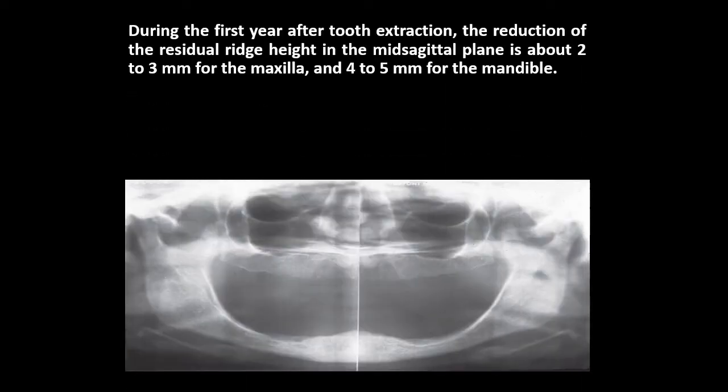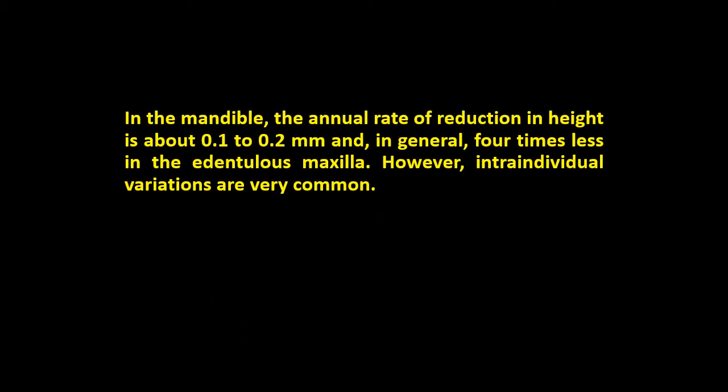During the first year after tooth extraction, the reduction of residual ridge height in mid-sagittal planes is about 2 to 3 millimeters for the maxilla and 4 to 5 millimeters for the mandible. The annual rate of reduction in the mandible is about 0.1 to 0.2 millimeters, and it is generally four times less in the maxilla; however, intra-individual variations are very common.